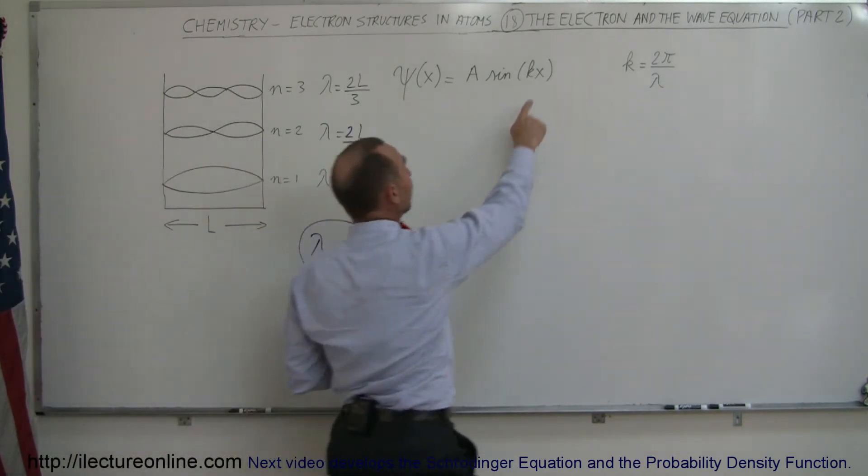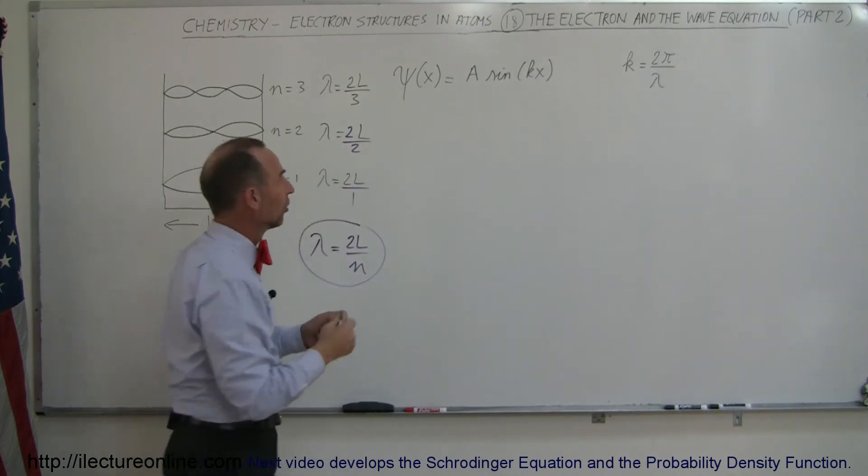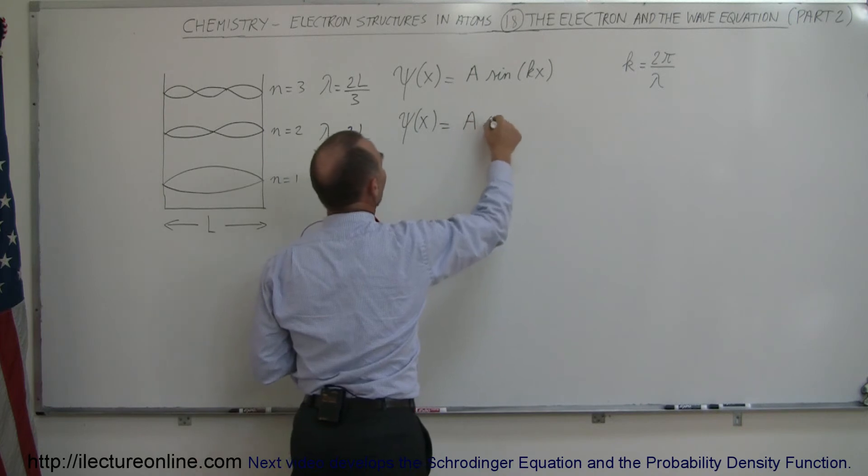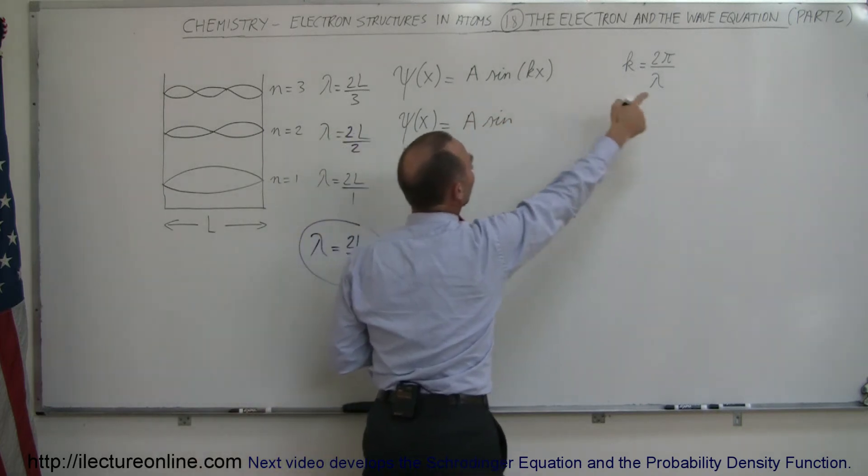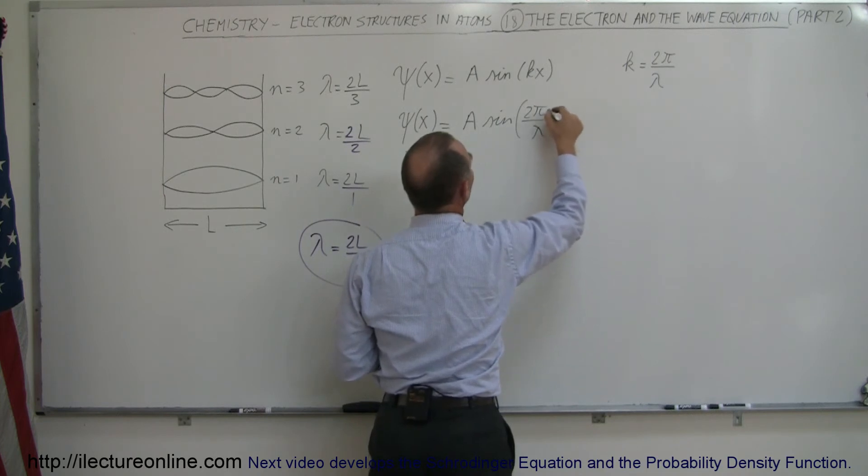Secondly, we should also replace k by what k is equal to, which is 2π over lambda. So let's do that first. So we can now say that the wave equation is going to be equal to A times the sine of, instead of k we're going to write 2π over lambda, 2π over lambda times x.